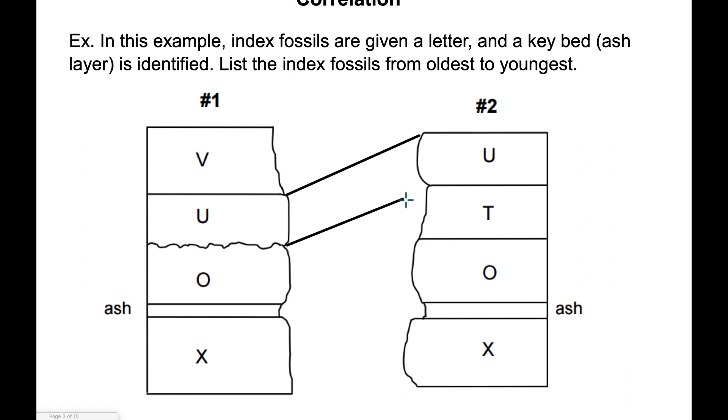So layer U goes from here to here. However, between layer U and O in this strata, there was obviously some sort of erosion because I can tell layer T was completely eliminated in strata number one. Here's layer O, here's my ash layer, and this allows me to identify the different ages for each of the different strata, which is telling me that our oldest layer is X, followed by the ash layer, followed by layer O. T is the next oldest layer, followed by U, and then finally our youngest layer is V.